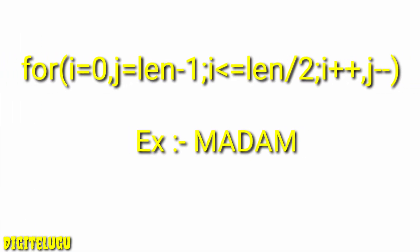Next we declare the i and j variables as integer data type. So lan will change — the string is 'madam'. The string length strlen(str) is stored in lan. So lan equals the string length of 'madam', which is 5: index 0=m, 1=a, 2=d, 3=a, 4=m.